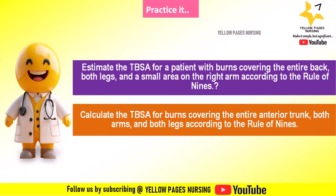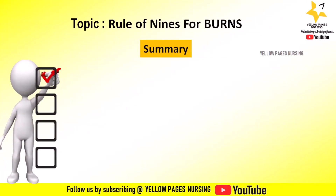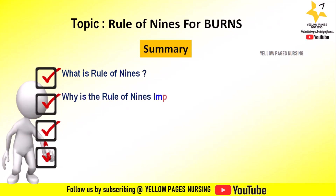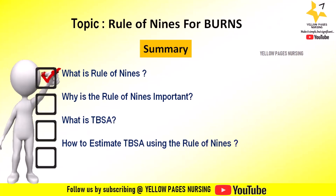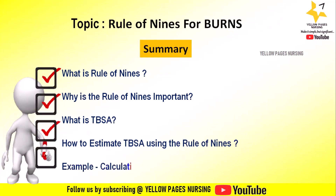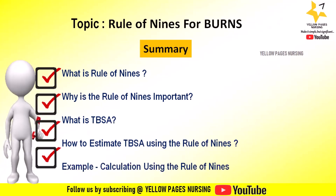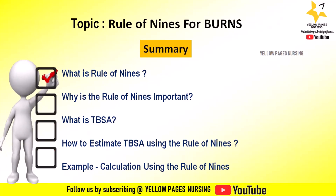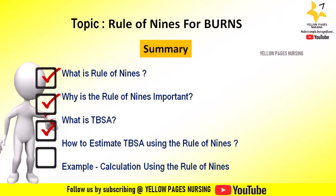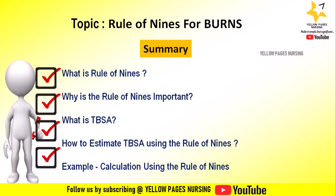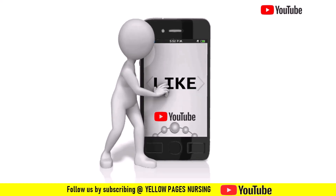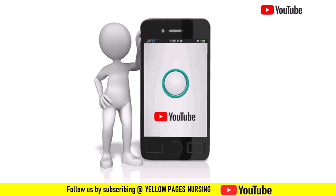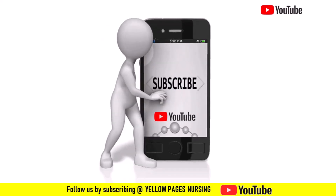So far we have discussed: what is the Rule of Nines, why is the Rule of Nines important, what is total body surface area, how to estimate TBSA using the Rule of Nines, and examples for calculation. If you find this video useful, please like it, share it, and subscribe, and do not forget to hit the bell icon to receive instant notifications. Thanks for watching and have a nice day.